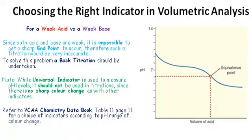If you refer to the VCA chemistry data book, table 11, page 11, you'll see a choice of indicators which you can choose according to the pH range of color change.